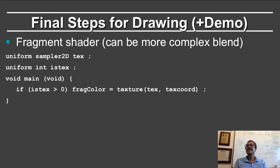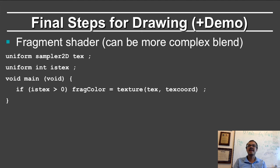The fragment shader in this case is very simple, although it can be a more complex blend. It takes this uniform sampler2D tex and the isTex command. It simply says: if isTex is greater than 0, then the fragment color will be given by texture(tex, texCoordinate). That is the relevant part of the fragment shader for texturing. Of course, other commands for lighting are also done if we are not texturing, and this can be a more complicated blend — you could do the standard lighting calculation modulated with the texture. But in this case, we are just looking up and using the texture map directly.